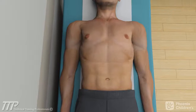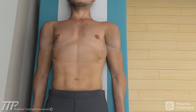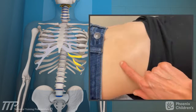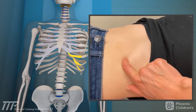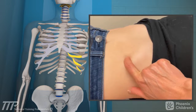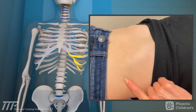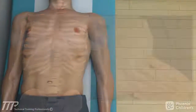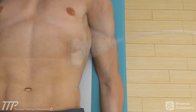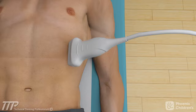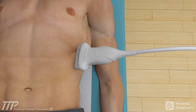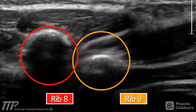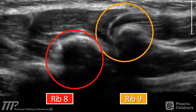Slipping Rib Syndrome is diagnosed on physical exam by palpating the lower costal cartilages and feeling the movement of the cartilages against each other. Dynamic ultrasound is a radiologic modality that can allow for direct visualization of Slipping Rib Syndrome in real time.